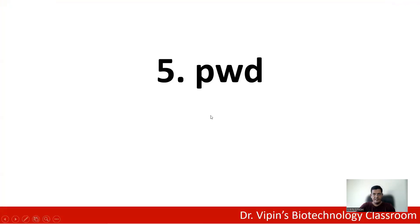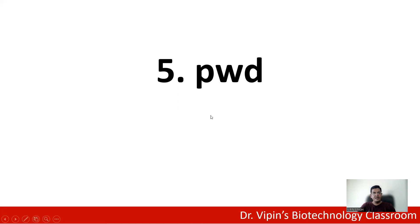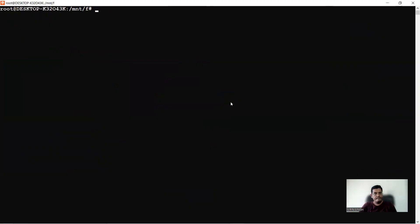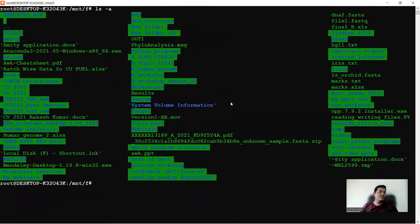To summarize: pwd shows the present working directory; cd changes the directory; cd .. moves one folder up to the parent folder; ls lists files and folders in the current directory; ls -l gives detailed information including permissions, size, and creation date; and ls -a shows hidden files and folders — those starting with a dot that are normally not visible.